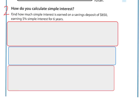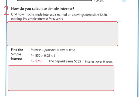Moving on to the second problem. How do you calculate simple interest? Find out how much simple interest is earned on a savings deposit of $850, if it earns 5% simple interest over a span of 6 years. Write: interest equals principal (the original amount) times rate — 5%, move the decimal back 1, 2, giving 0.05 — times time, which is years. When you calculate it you'll get your answer from the calculator. Some problems ask for just the interest; if it asks for a total, you'd add the interest to the deposit.